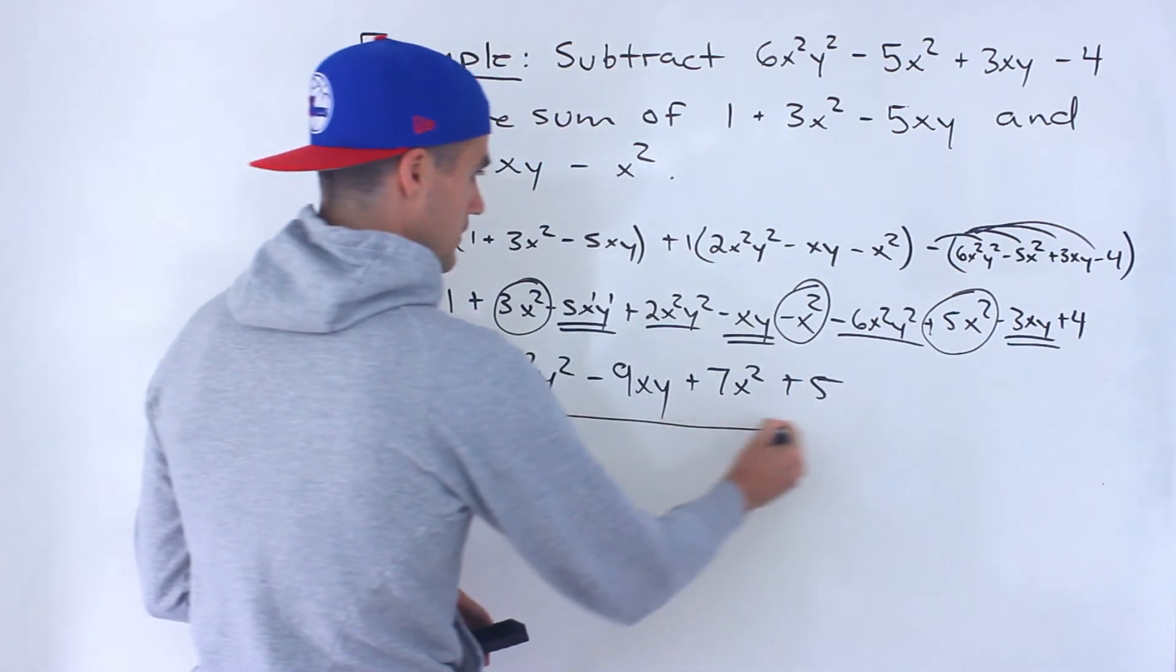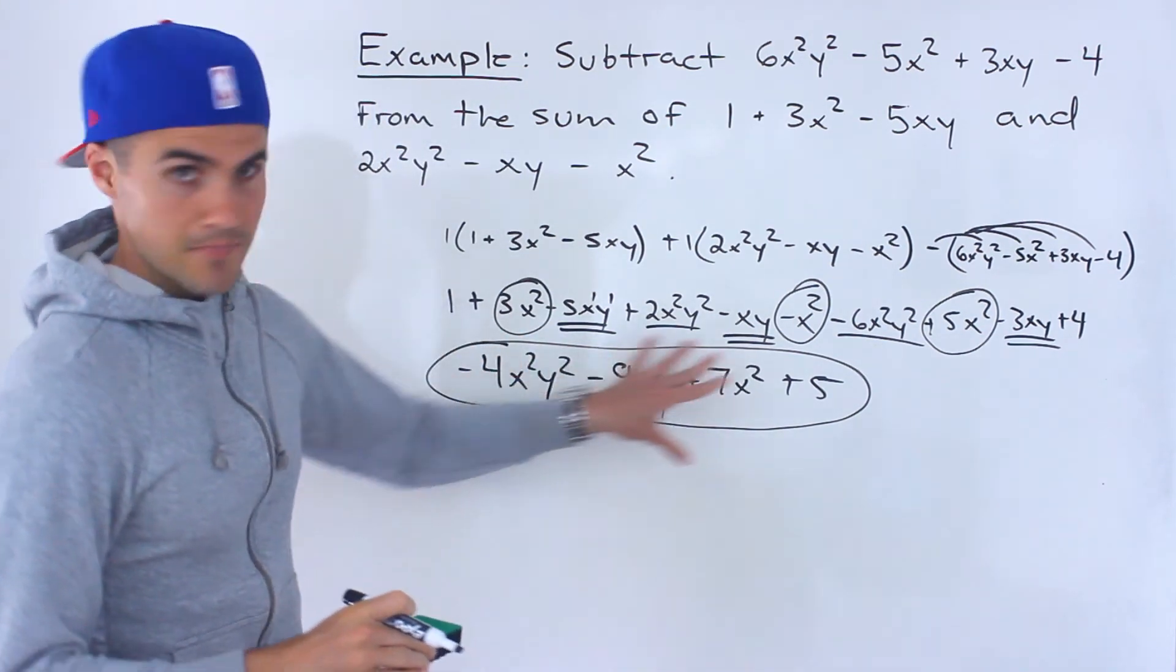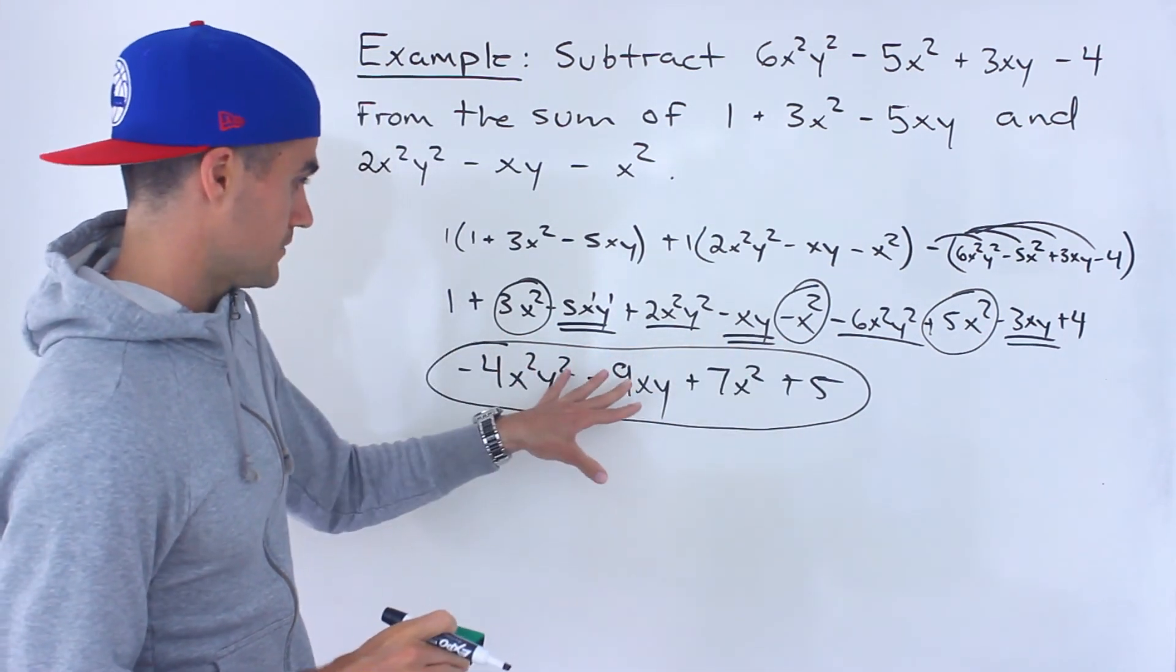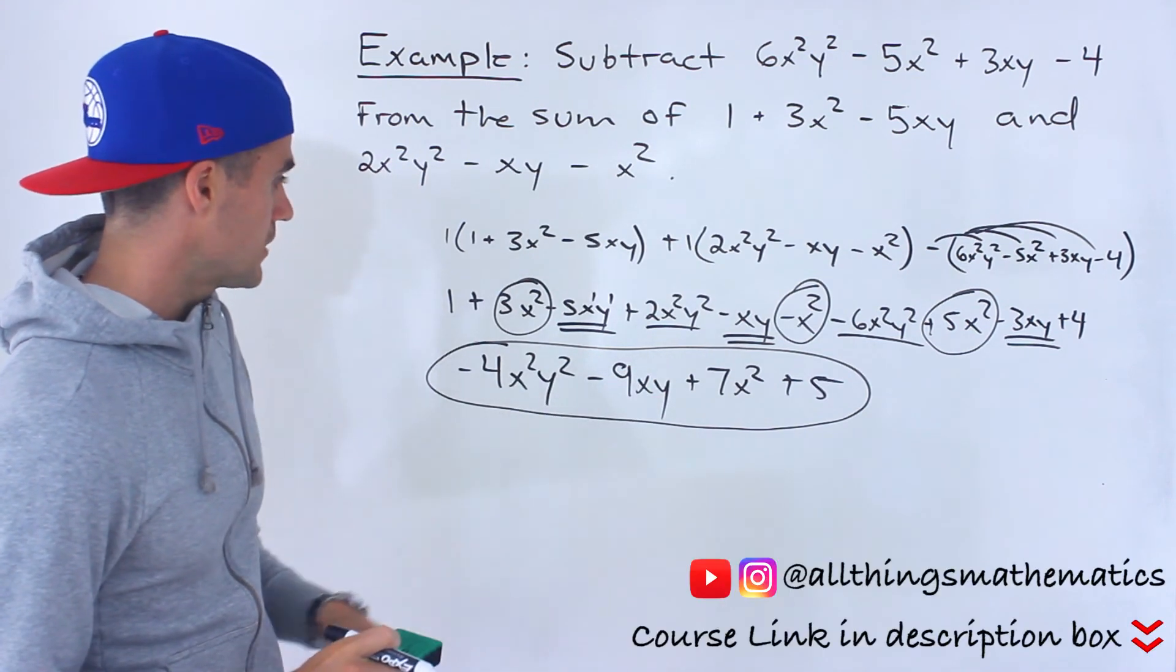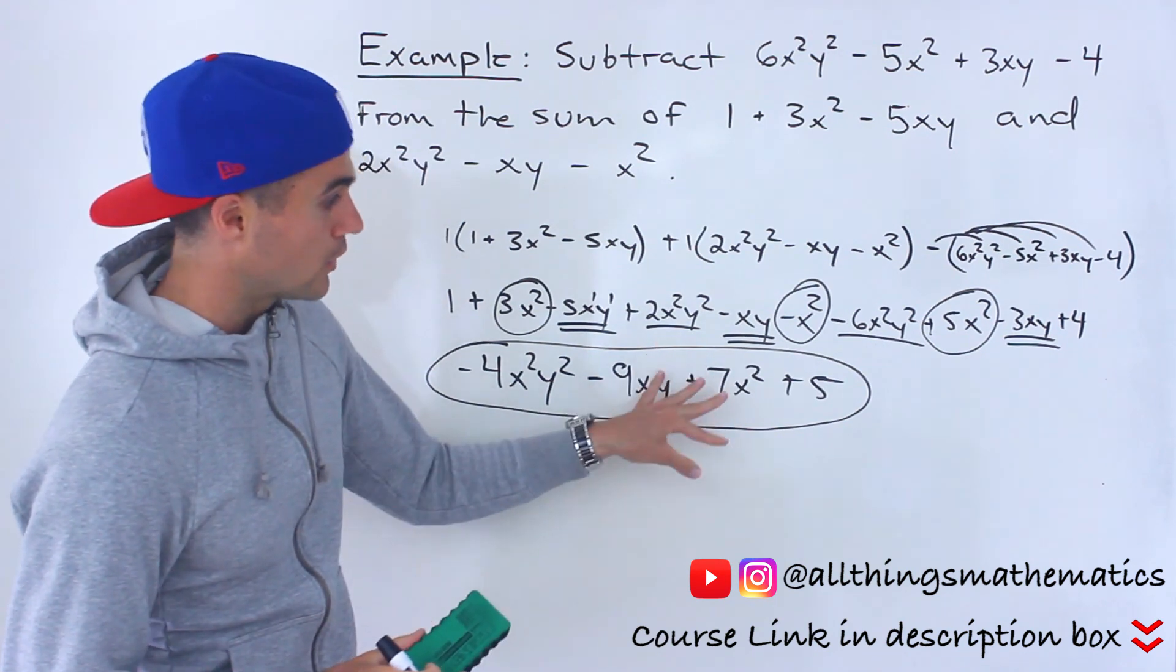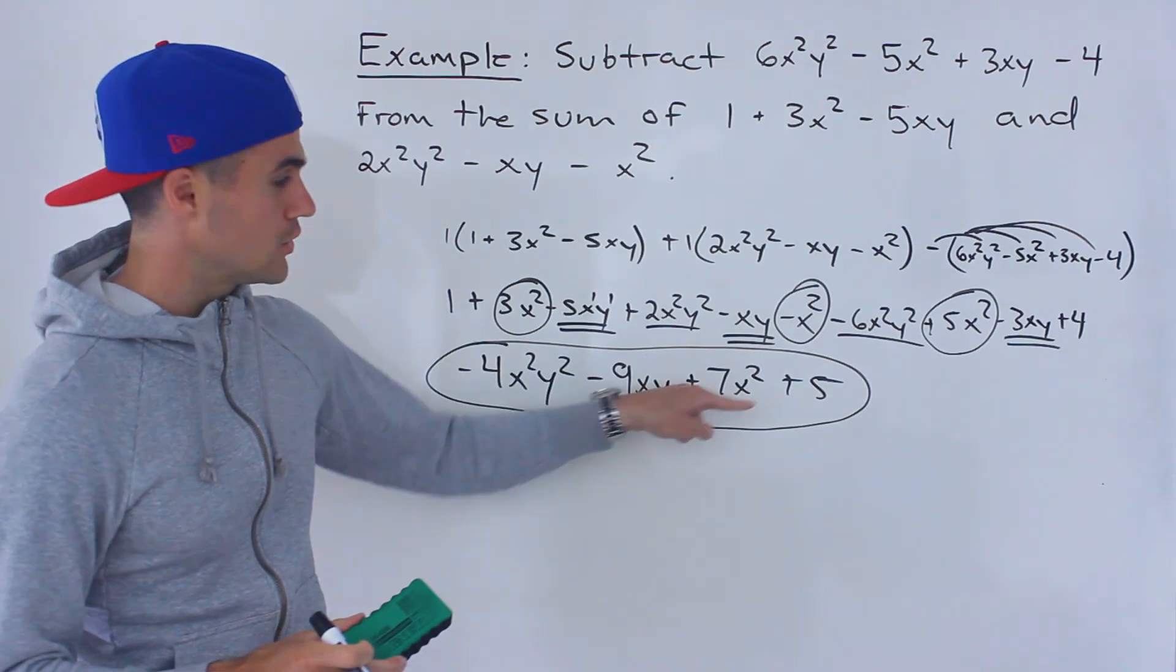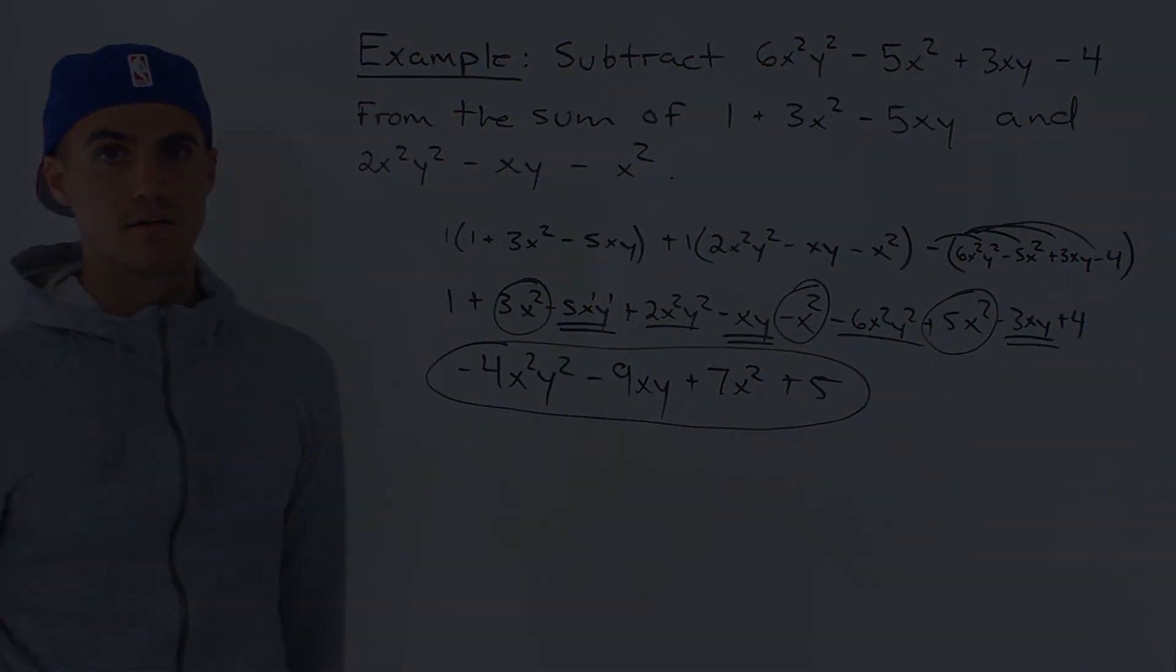And so this here ends up being the final answer. If this is a multiple choice question, this may be in a different order, this answer. These expressions can be in a different order. But whichever order they are, these are the correct signs and the correct coefficients that should be in front of these variables and the constant is 5.